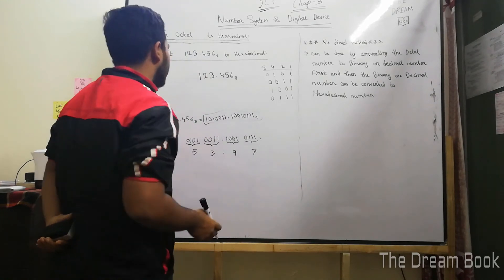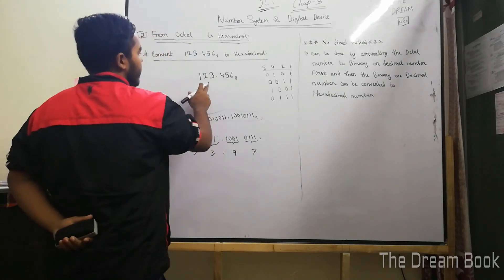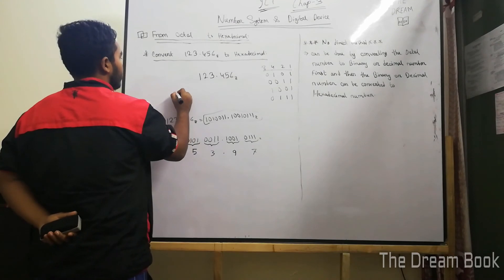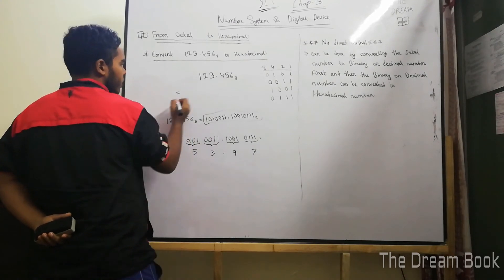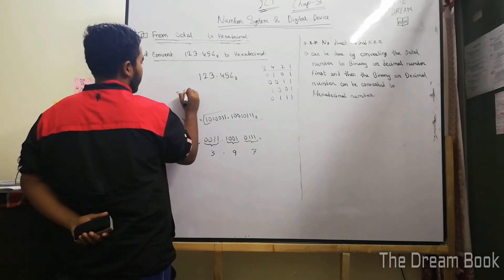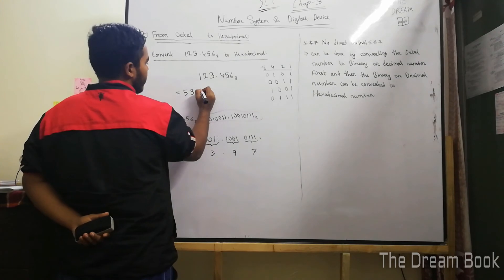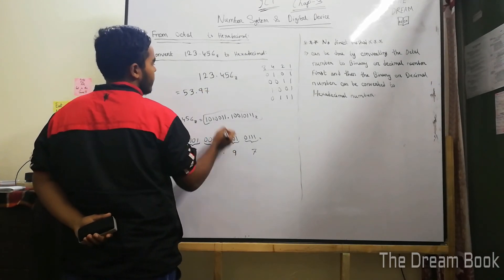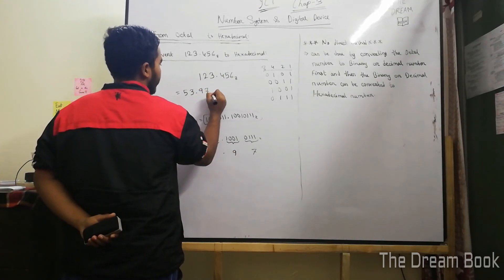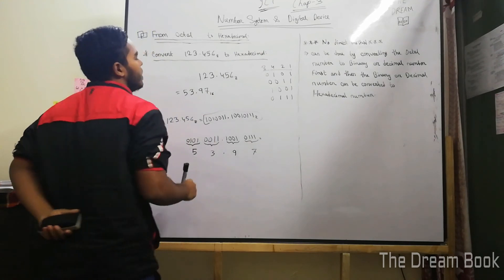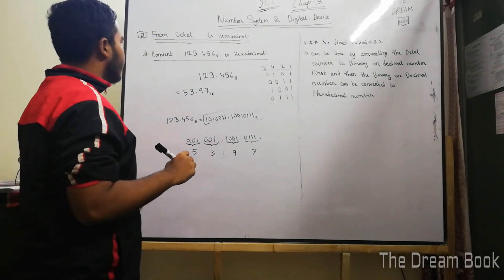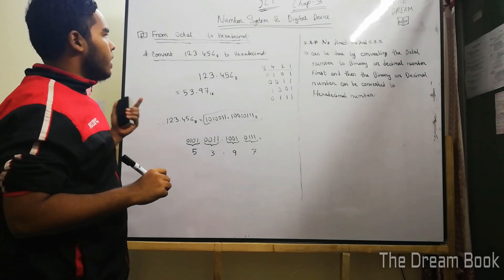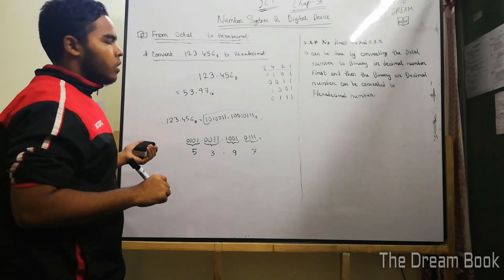This is the result of our solution. As we converted, this octal number equals 5, 3, 9, 7. Since it is a hexadecimal number, we write 16 as the base below it. So we had a 4-digit octal number, and when we convert it to the hexadecimal number system, we get this result.